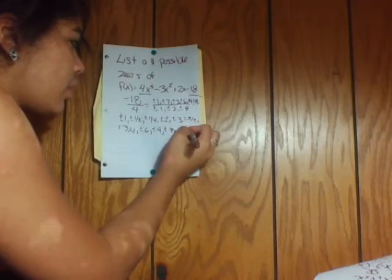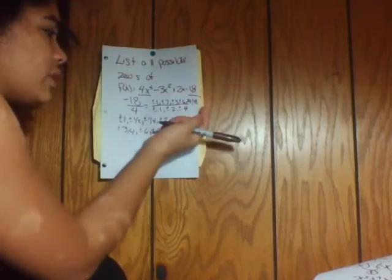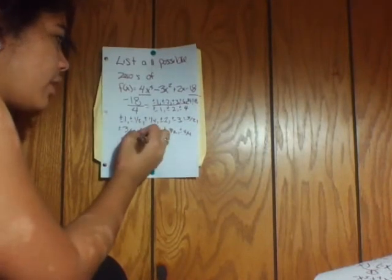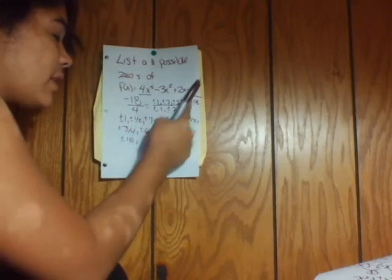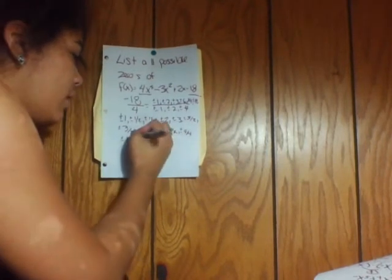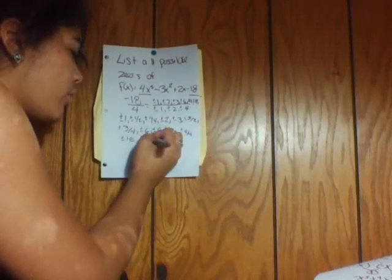And then your last one is 18, so it would be plus or minus 18. And then divided by 2 would be 9, so you don't have to do that one. And then the last one would be plus or minus 18/4.